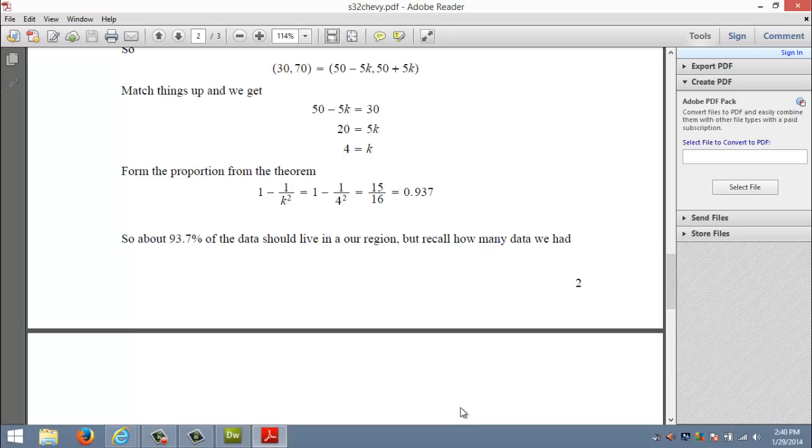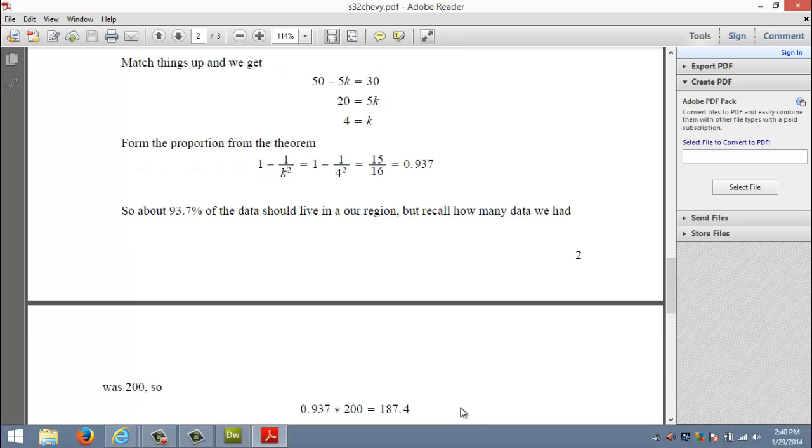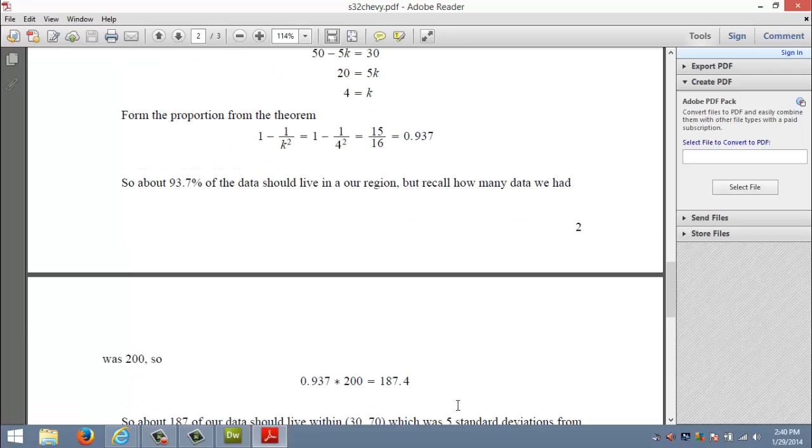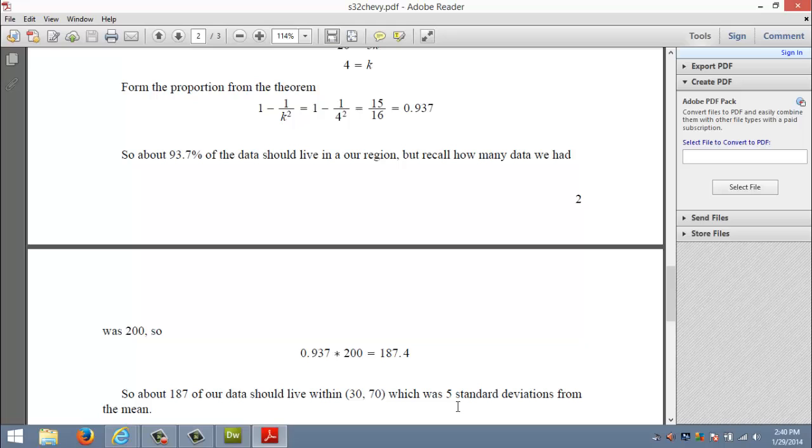That says that essentially 93.7% of my 200 numbers should live in there. So if I actually wanted to find out how many numbers would that be, I would take 0.937 multiply that by 200. So essentially 187 of the 200 numbers should live in that interval between 30 and 70.